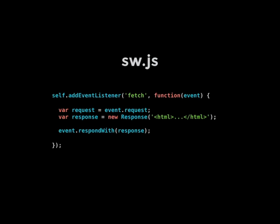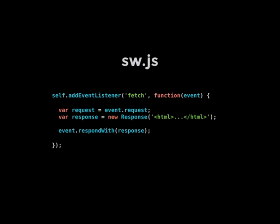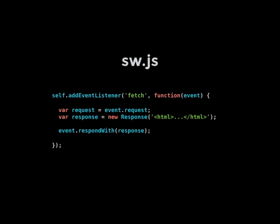If we look at the fetch event, we can pretty much put what we want in there, and what we want to end up with is giving back something that is HTML. This is a really trivial example, but it shows that we get this event object which has a request within it — we can examine that and then pass back a response. If we want to make that a little bit more useful, we need to look at a couple of other APIs.